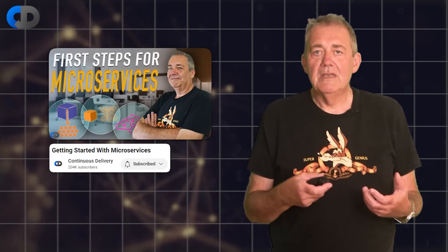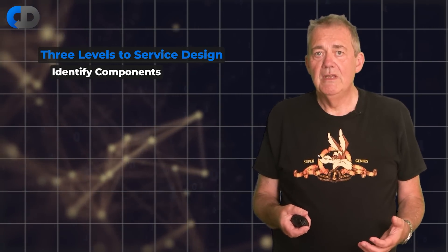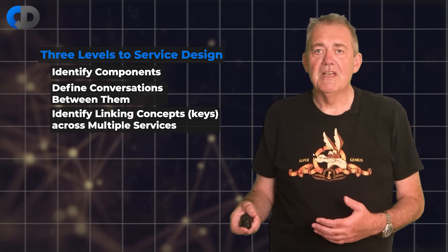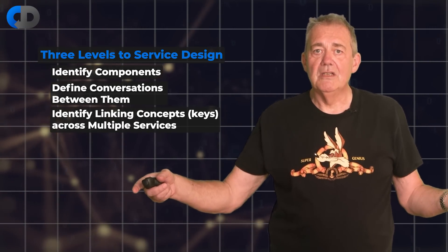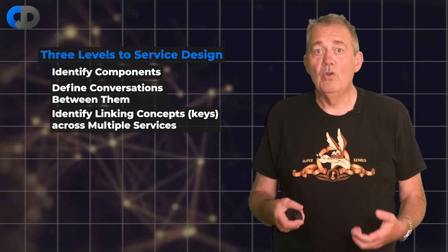As we progress down this track, inevitably things can become more complicated, but in my opinion always in a simpler way than the alternatives. I think it's useful to think of the design of systems like these in three parts. We need to work on three levels in our design: identifying sensible components for our system, defining the conversations between them, and identifying the key concepts that link the different conversations so that we can see a coherent picture. I think that event-based architecture and taking an event-based approach to the modelling of our systems helps a lot with all of these things.